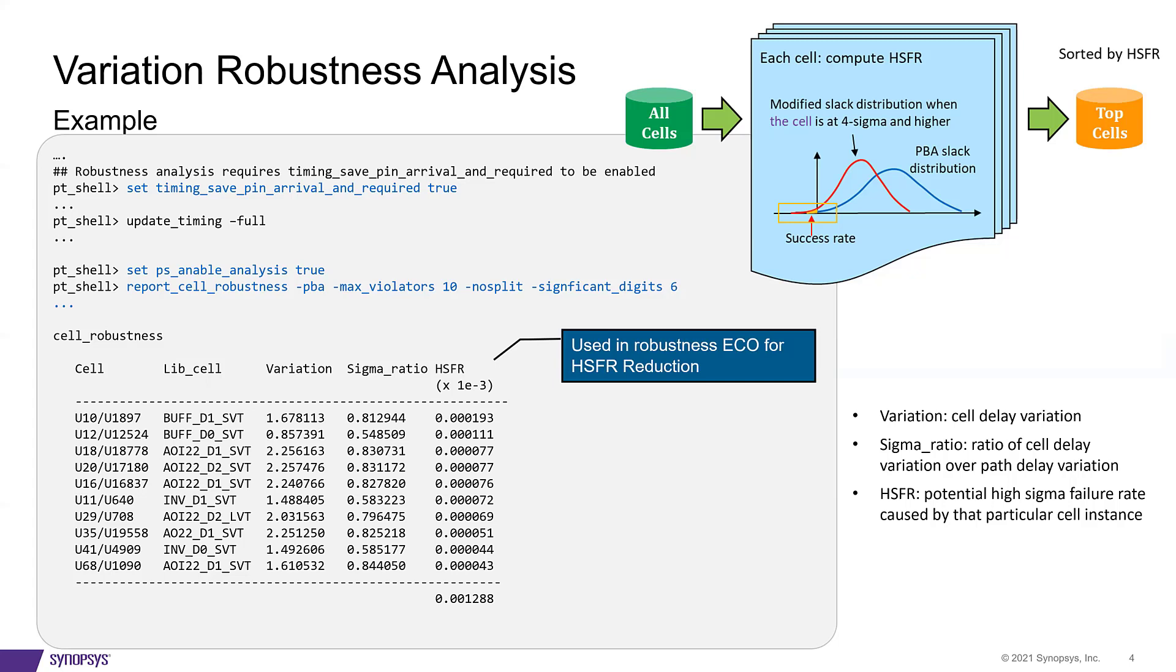The HSFR of a cell simply means that if a particular cell is at a high sigma, what's the likelihood that the design will fail? The HSFR of a cell is a single event. When a particular cell is at 4 sigma or above, and the rest of the cells on the path are at 3 sigma, then what is the expected success rate loss?